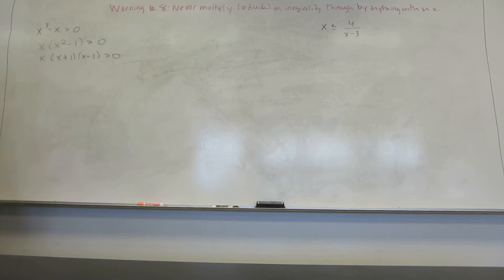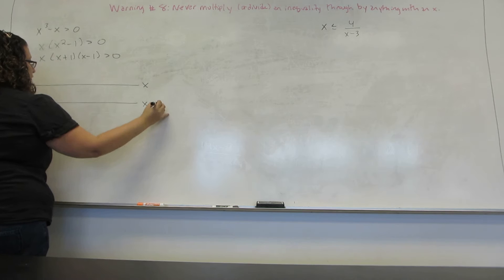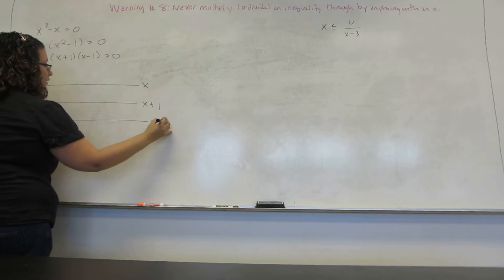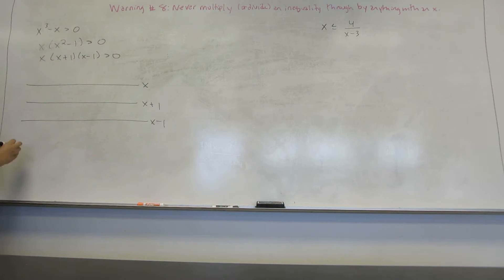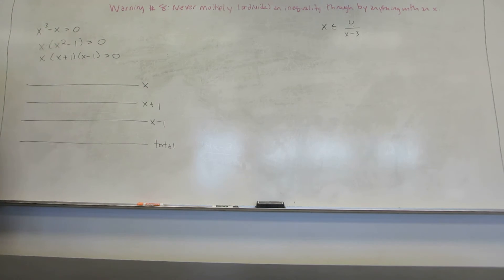Now here's where the sign chart comes into being. Every single factor is going to get a horizontal line. So I get a line for X, a line for X plus 1, and a line for X minus 1. And then I get a line that I'm going to call total. Now these are number lines, which means that smaller numbers go on the left, bigger numbers go on the right. Keep that in mind.